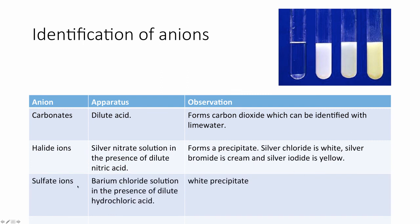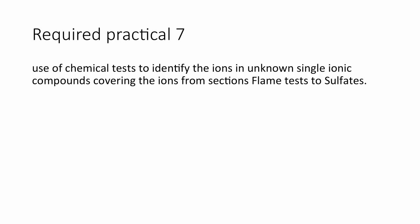And then finally sulphate ions, identified by adding barium chloride solution, again acidified in the presence of dilute hydrochloric acid. And they will form a white precipitate of barium sulphate if sulphate ions are present. Now you would have performed required practical 7, which uses the anion tests as just discussed, the metal hydroxide reactions, and also the flame tests.